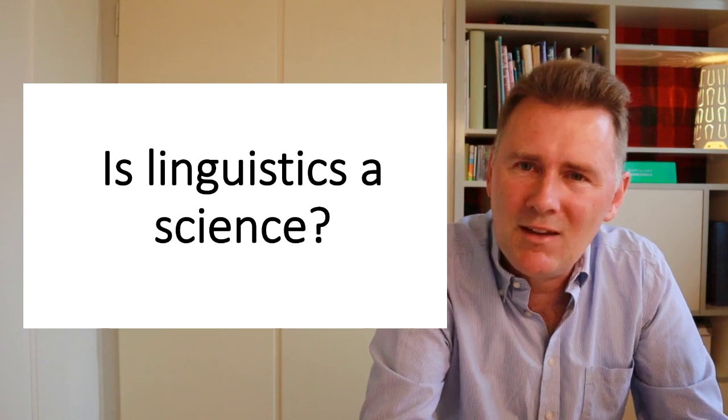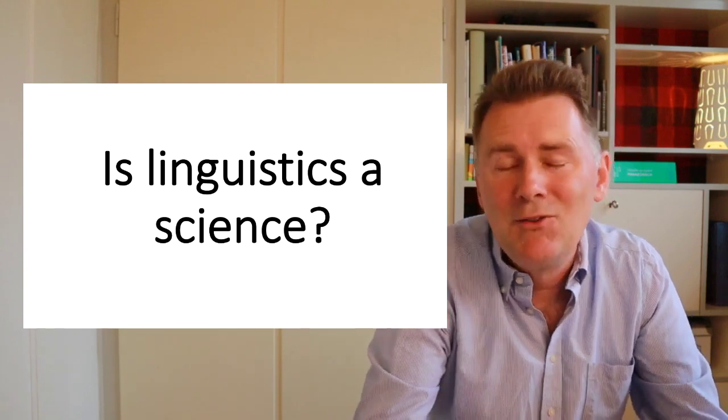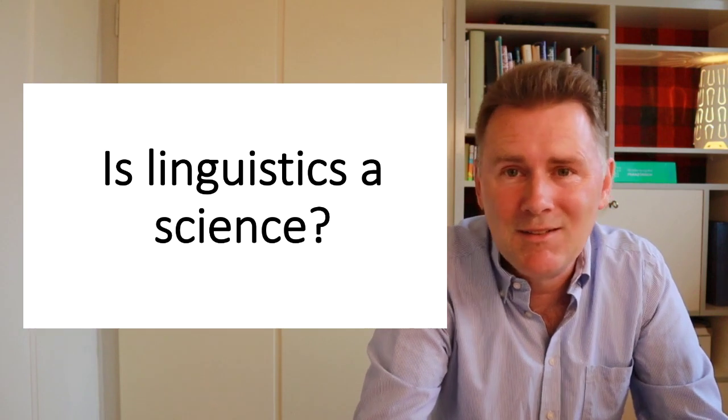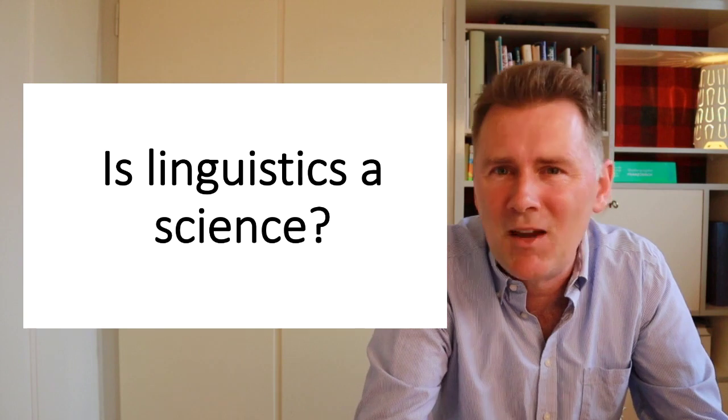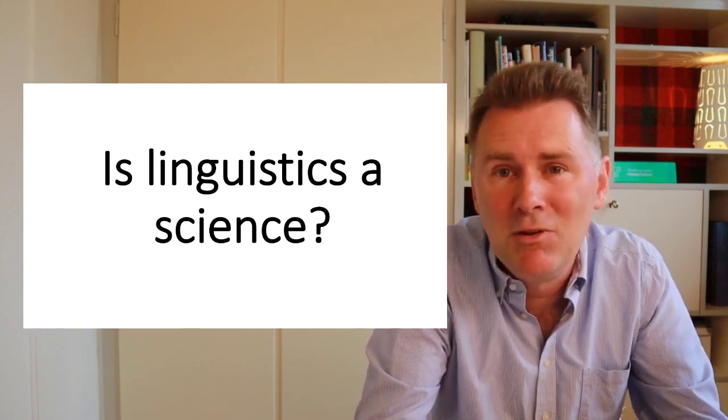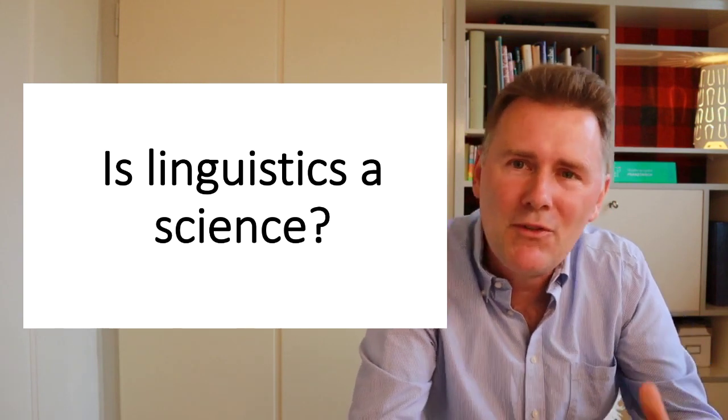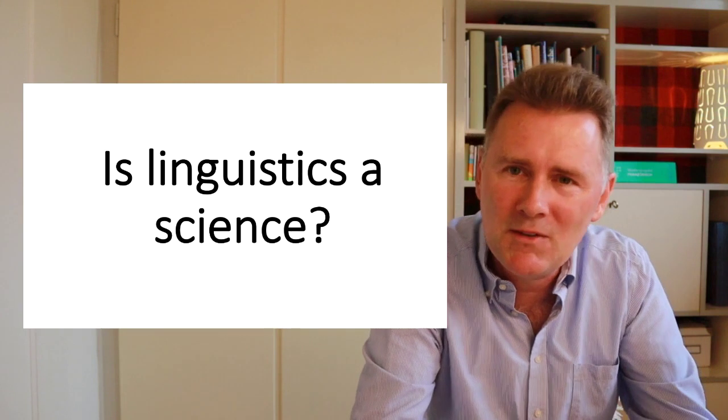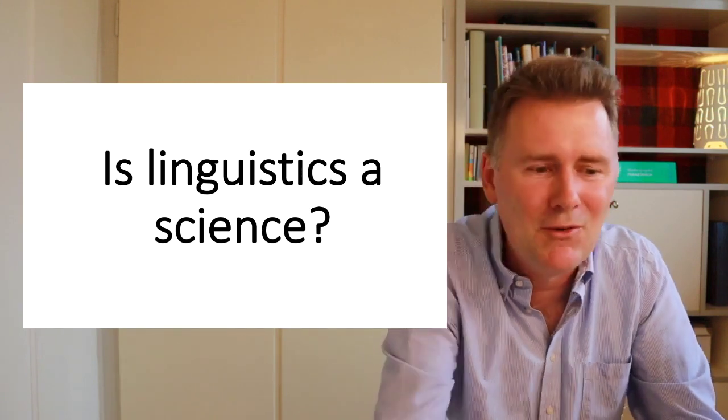However, it's also the case that this question is rarely asked in a neutral way. Humanities and social sciences have a reputation of being soft and fuzzy and sometimes even politically charged. So I'll come back to this implicit criticism at the end of this video. For now, let's just focus on three similarities between linguistics and the natural sciences and then three differences.